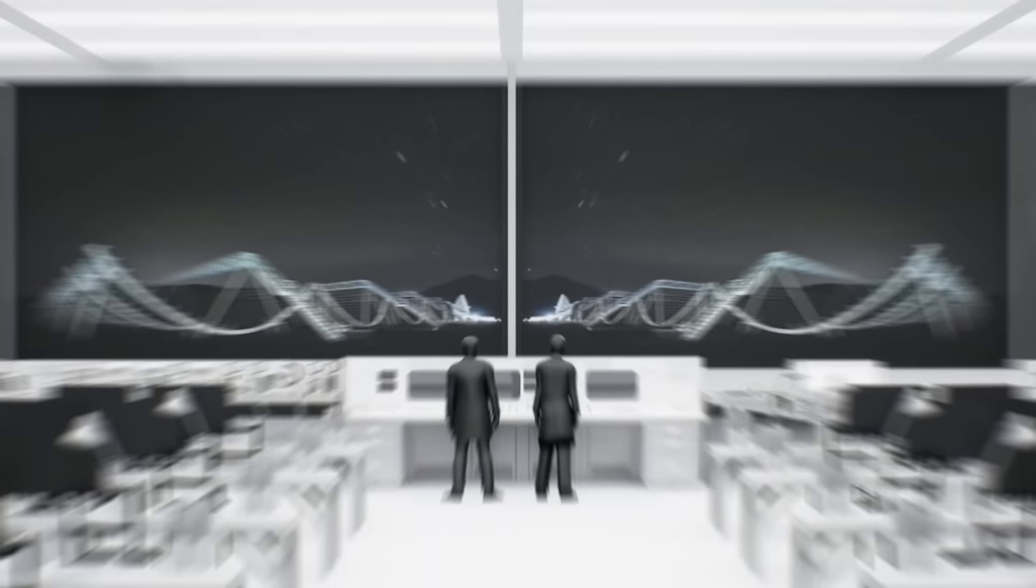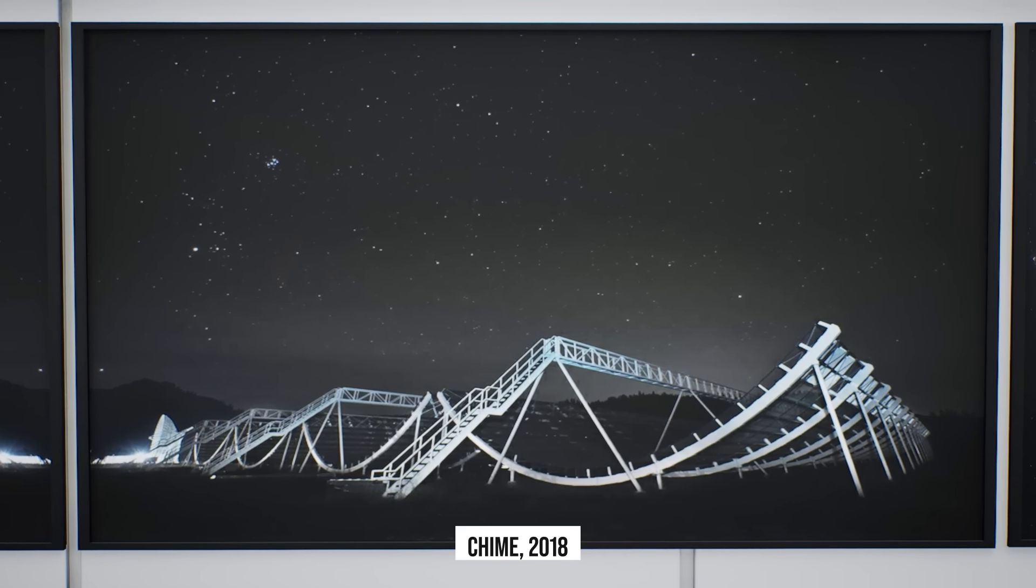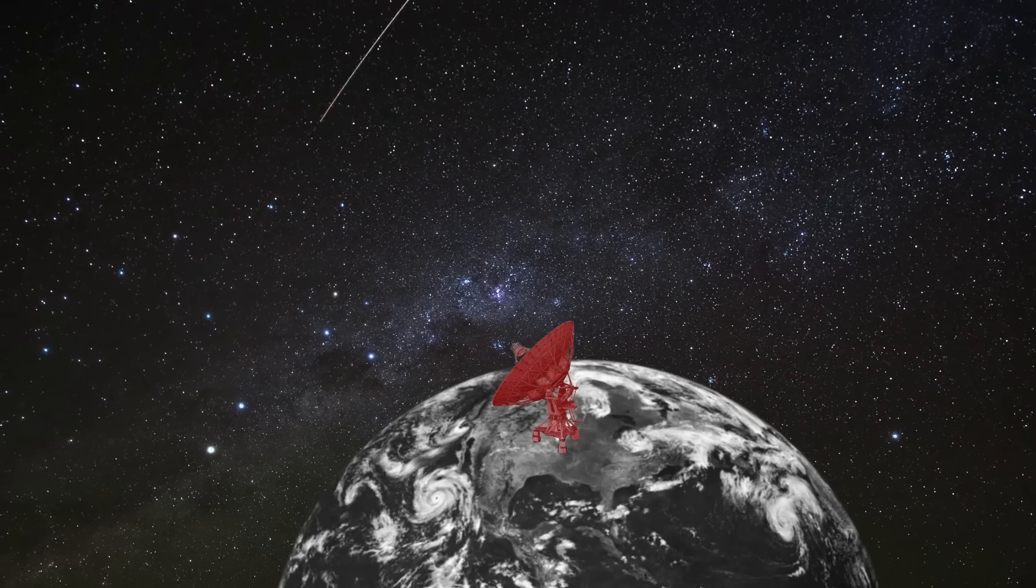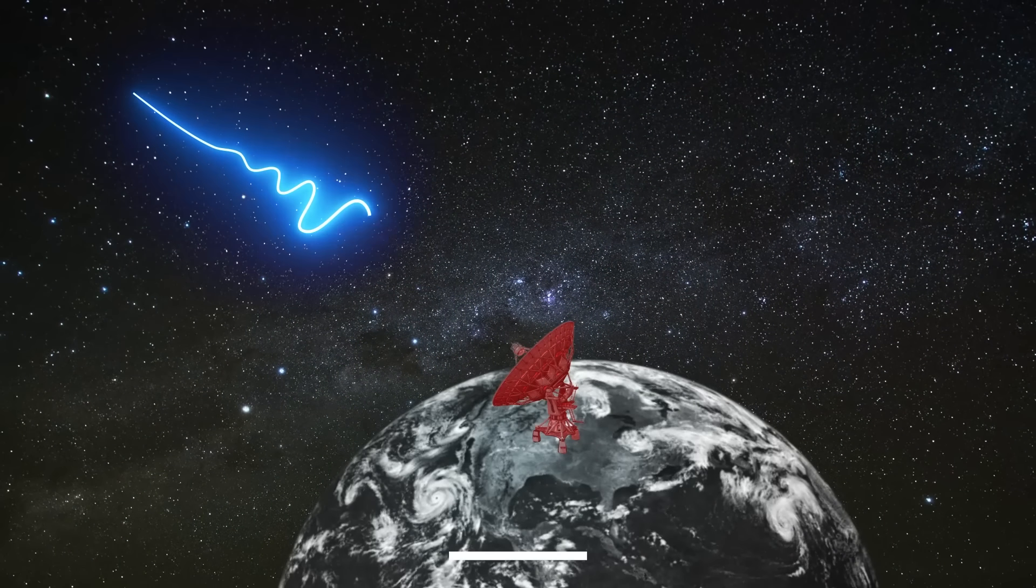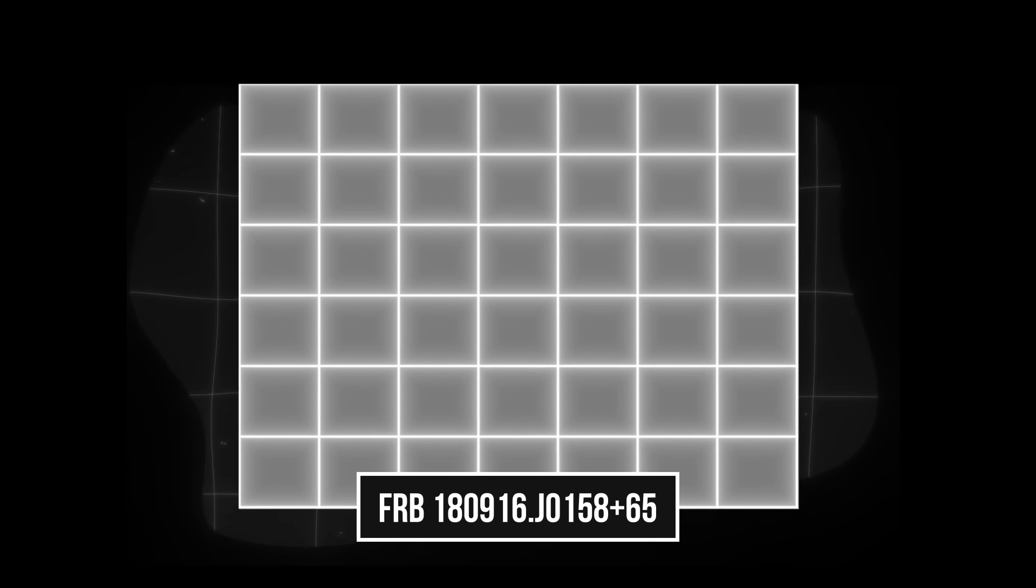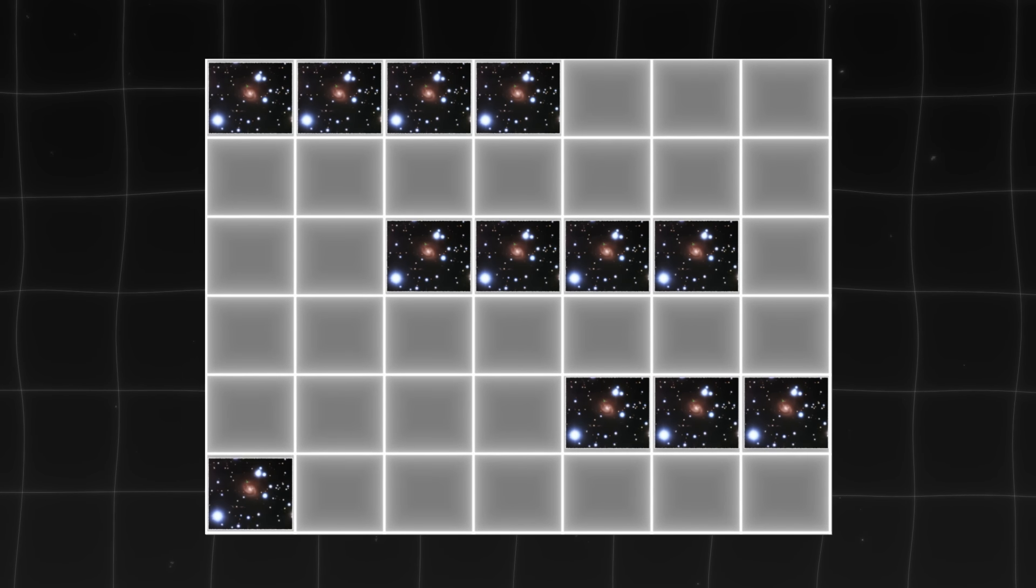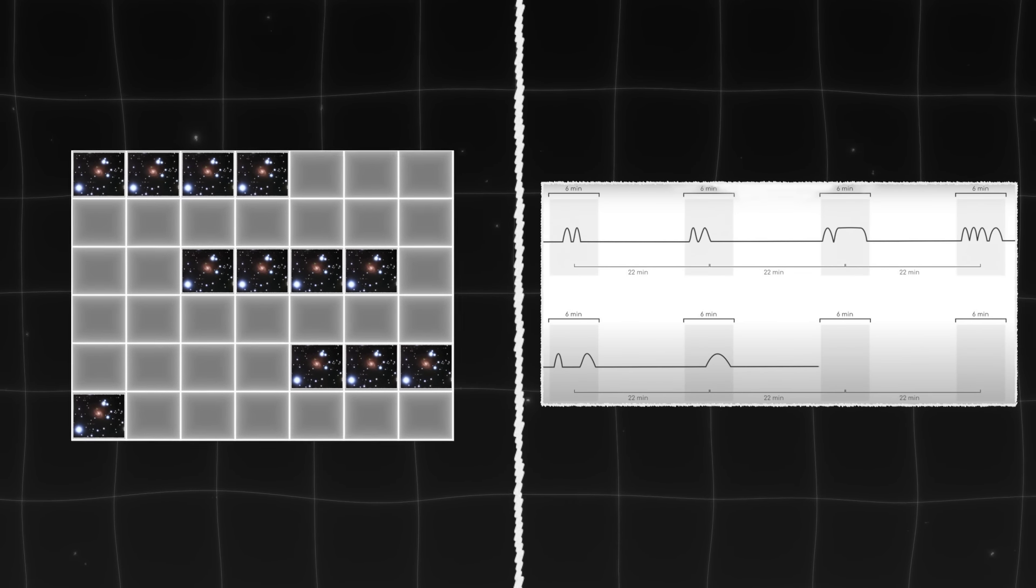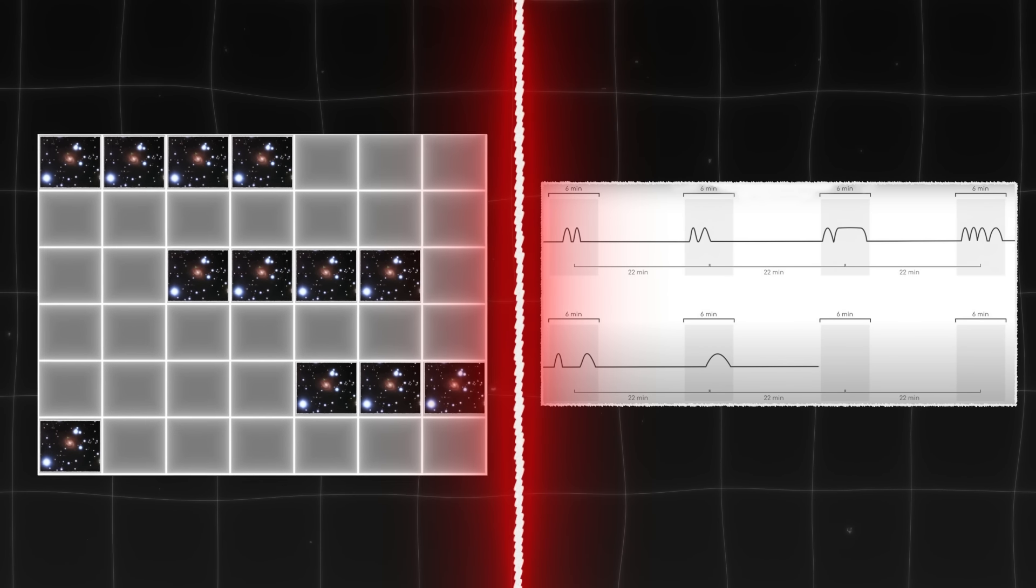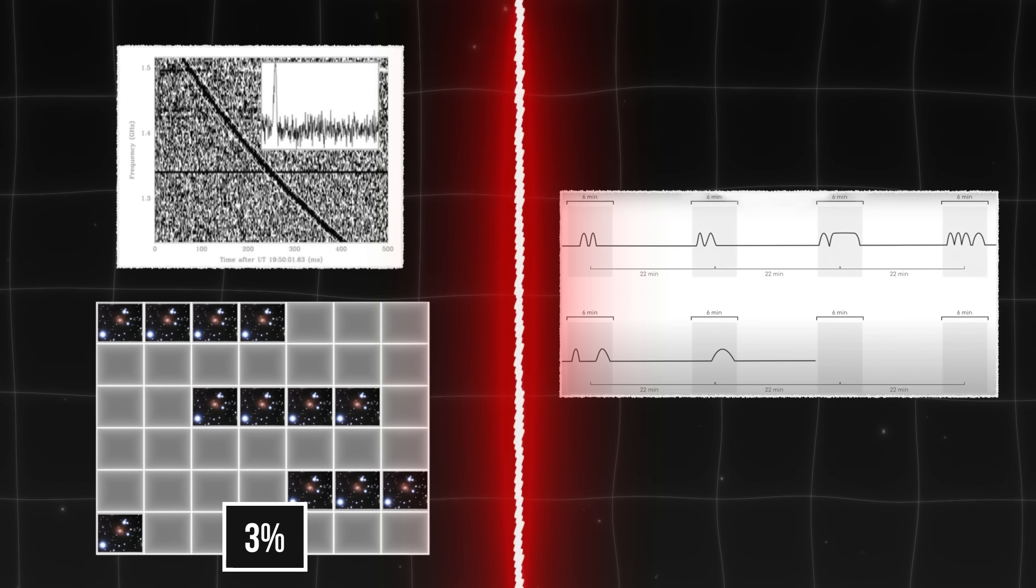Pero en 2018, investigadores canadienses registraron el primer FRB repetido, cuya intensidad se compara con años de actividad solar. Este destello viajó desde 457 años luz de distancia, repitiéndose cada 16 horas. Aparecía durante 4 días, emitía una o dos ráfagas por hora, y luego desaparecía 12 días. Esto es inquietantemente similar a nuestra señal de 22 minutos. Sin embargo, solo el 3% de señales FRB se repiten, y nadie sabe qué las produce.